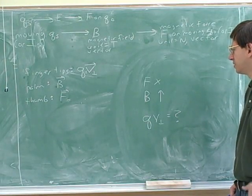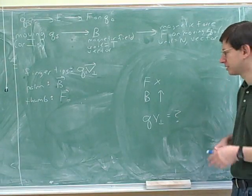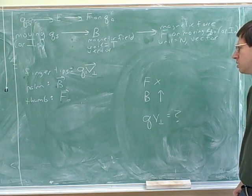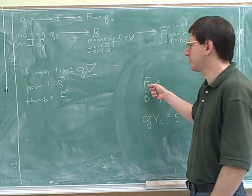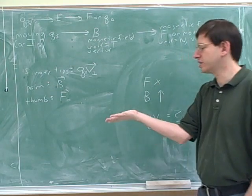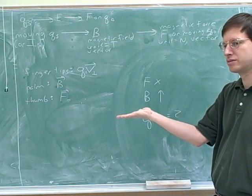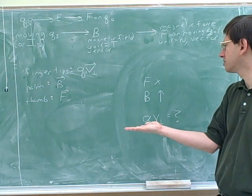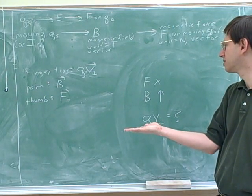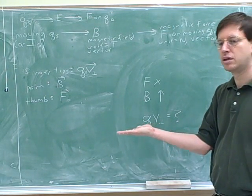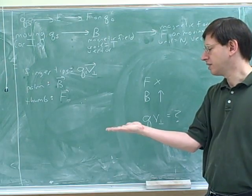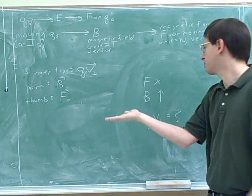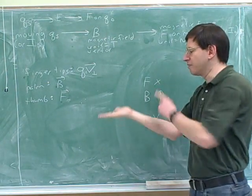Let's try this problem. I would start by putting my thumb into the board — the force represents the thumb, and this means into the board. But then B is pointing up, so it's kind of like this. There are lots of different places you can be pointing your palm, but we want to have our palm pointing up.